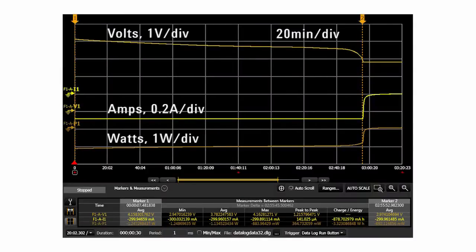Placing measurement markers at the start and cutoff voltage points on the data log revealed that the battery delivered 879 milliamp hour and 3.32 watt hour. Both of these values were notably lower than the 1 amp hour and 3.6 watt hour ratings obtained from the battery's datasheet.